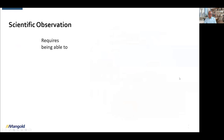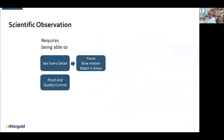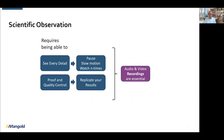The main conclusion here is that scientific observation requires being able to see every detail. Being able to see every detail means you need to be able to pause or slow down reality, rewind it, and watch it a number of times to really understand what's happening. It also requires that we can prove results and have quality control, because we are in science — this means we need to be able to replicate our results. This leads to the necessity of audio and video recordings.